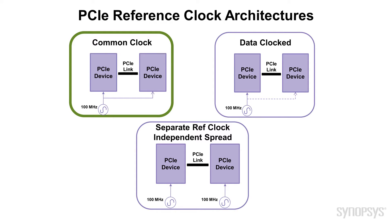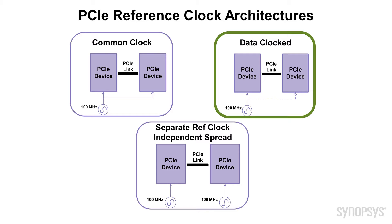Common clock architecture, where the reference clock is sent to both ends of the link. And even though that clock is spread, since it's delivered to both ends of the link, it is a synchronous system. A data clock architecture, where the reference clock may or may not be sent to the far end of the link. In that application, the receiver does not use the reference clock in its CDR, but that reference clock may be used by the rest of the system. And then the newly defined SRIS use model, where there is a separate reference clock at each end of the link.